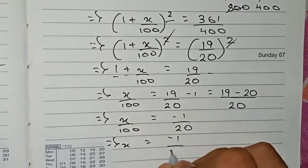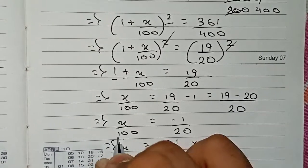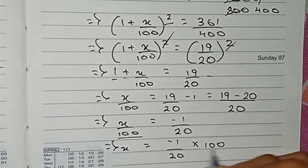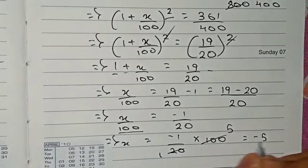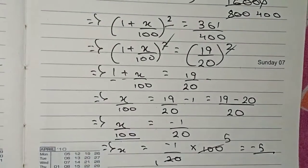Now we take this 100 to this side for multiplication, so it becomes minus 5. x equals minus 5.